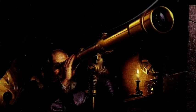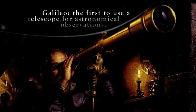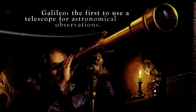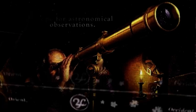The first to use a telescope for astronomical observations was Galileo. That was in 1609, exactly four centuries ago.